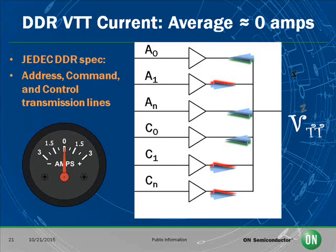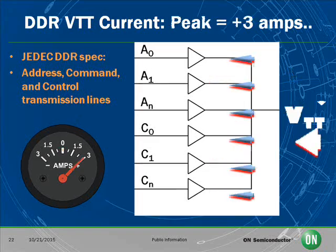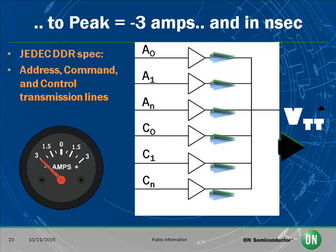Since there are many address and control lines, and statistically the number of 1s on all these transmission lines will equal the number of 0s, the VTT average current is going to be 0. But the VTT rail must be designed to handle large peak currents and still keep the VTT rail within a few tens of millivolts from the reference, since these lines may require VTT to go from full sourcing to full sinking current in just a few nanoseconds.